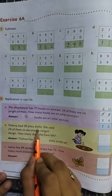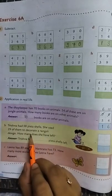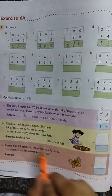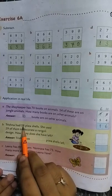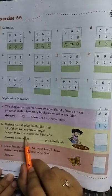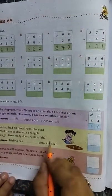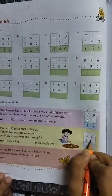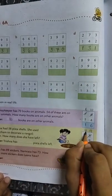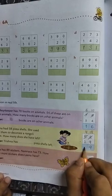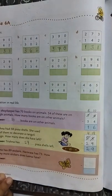Question B: Trishna had 58 pista shells. She used 29 of them to decorate a rangoli design. How many does she have left? So Trishna had 58 pista shells. She used 29 of them to decorate a rangoli. From 58 pista shells, out of 58, she has used 29 of them. Now how many shells are left? We have to find this. For this we have to subtract because we have to find out how many pistas are left. 58 minus 29. 8 minus 9 here, we will start from the one's place. 8 is smaller than 9, so we will borrow. 18 minus 9 is 9. 4 minus 2 is 2. Answer is 29. Trishna has 29 pista shells left.